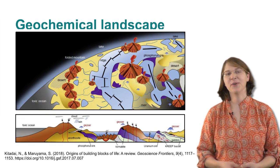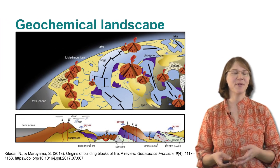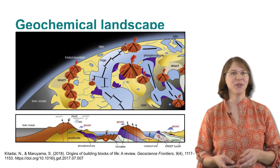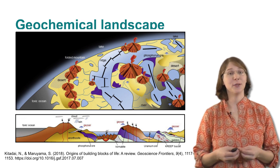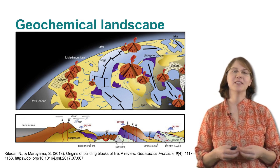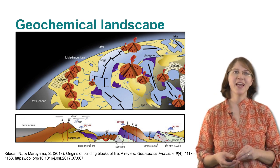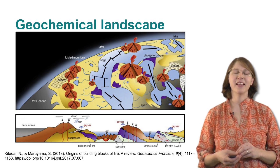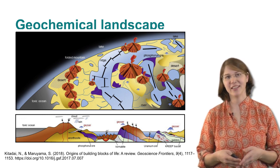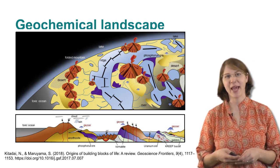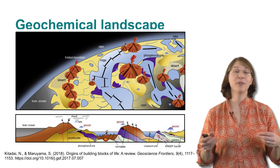The first thing that you should know is what the geochemical landscape of early Earth looked like. There was definitely an ocean that was warmer than today's oceans, and that ocean was probably a little more salty than the oceans that we have on today's planet.